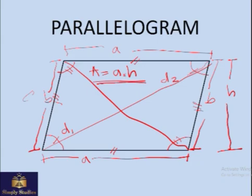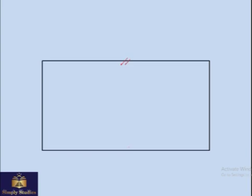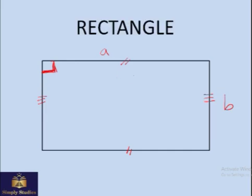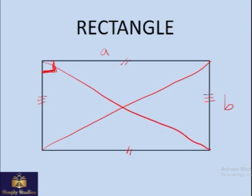We are not taking the average of the opposite sides because they are equal. Now if the same parallelogram has opposite sides parallel and equal to each other, but all the angles are 90 degrees — this is A and this is B — then this shape is known as a rectangle. In case of a rectangle, these two diagonals are equal, so we can call both D, and the area is simply A times B.